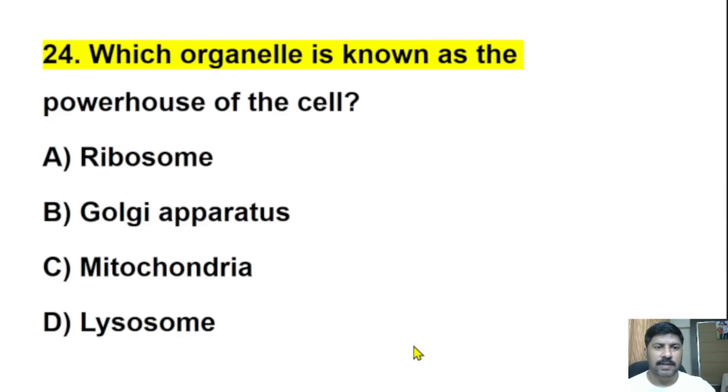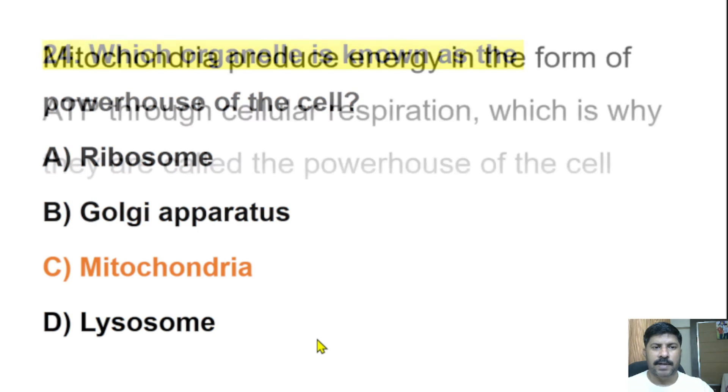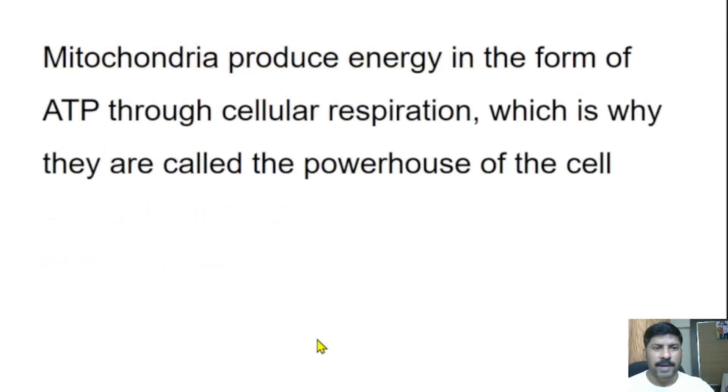Twenty-fourth question: Which organelle is known as the powerhouse of the cell? Ribosome, Golgi apparatus, mitochondria, or lysosome? The correct answer is mitochondria. Mitochondria produce energy in the form of ATP through cellular respiration, which is why they are called the powerhouse of the cell.